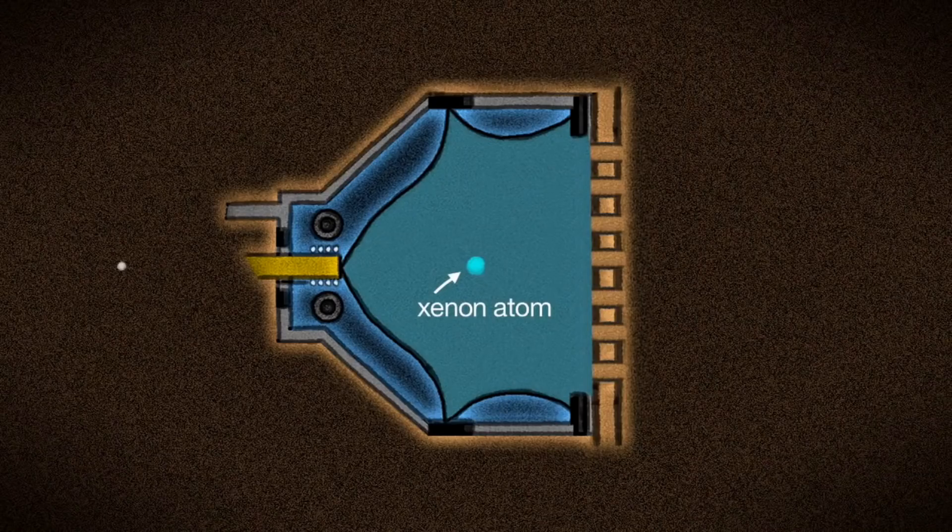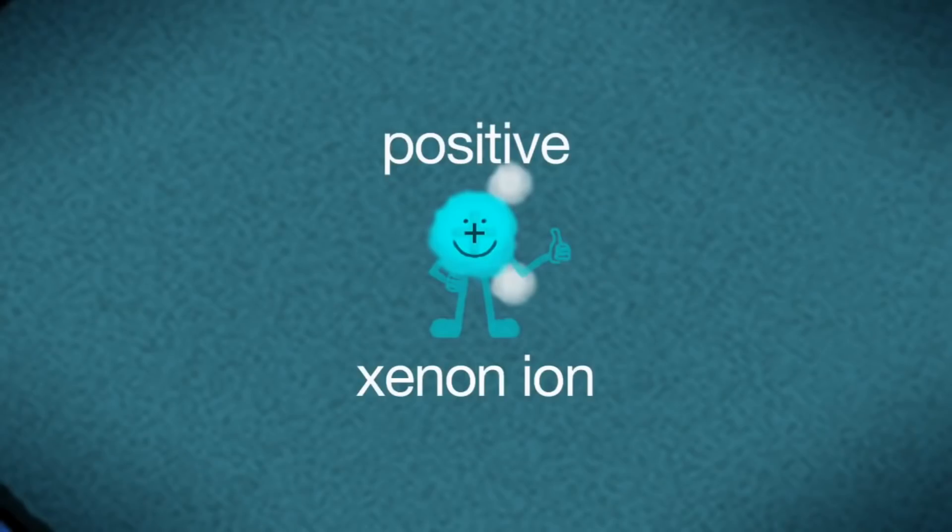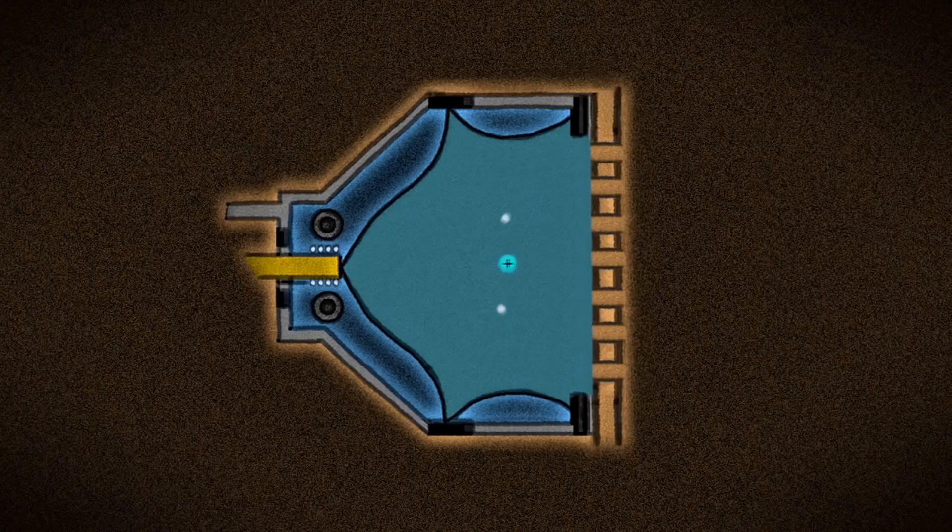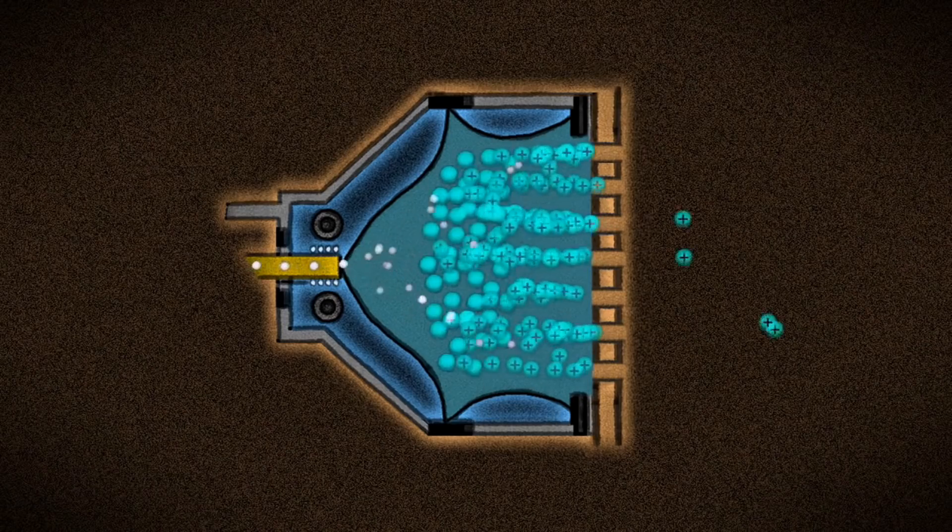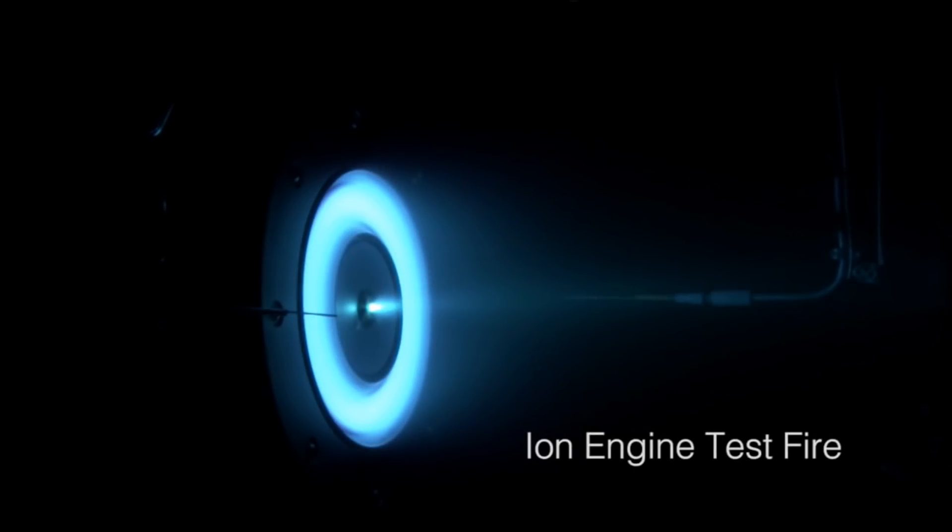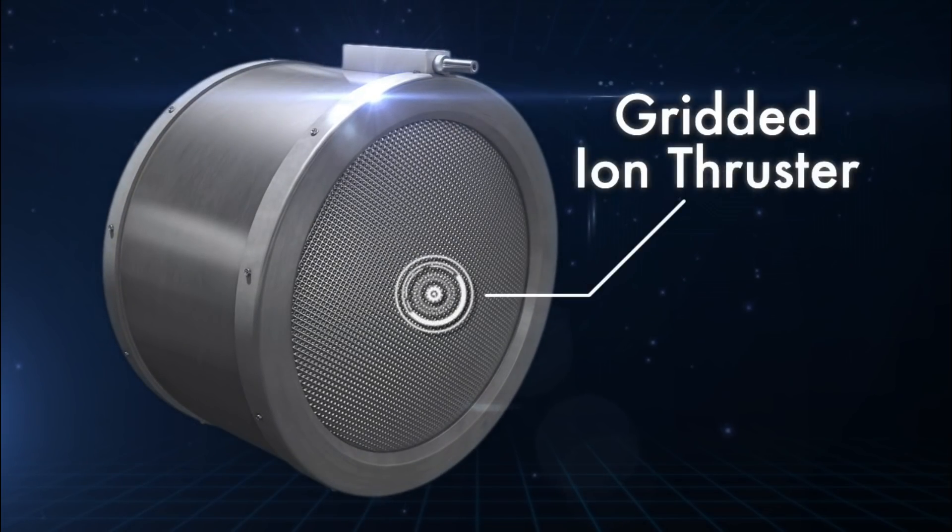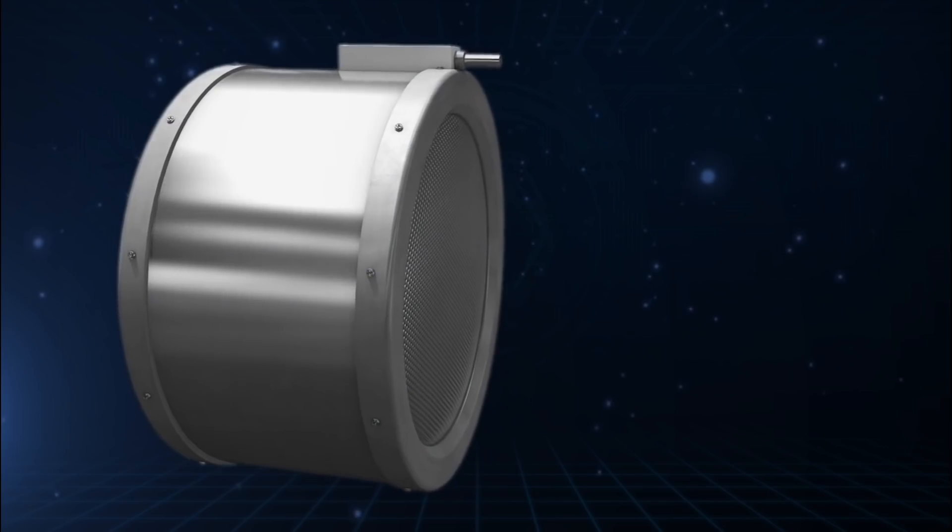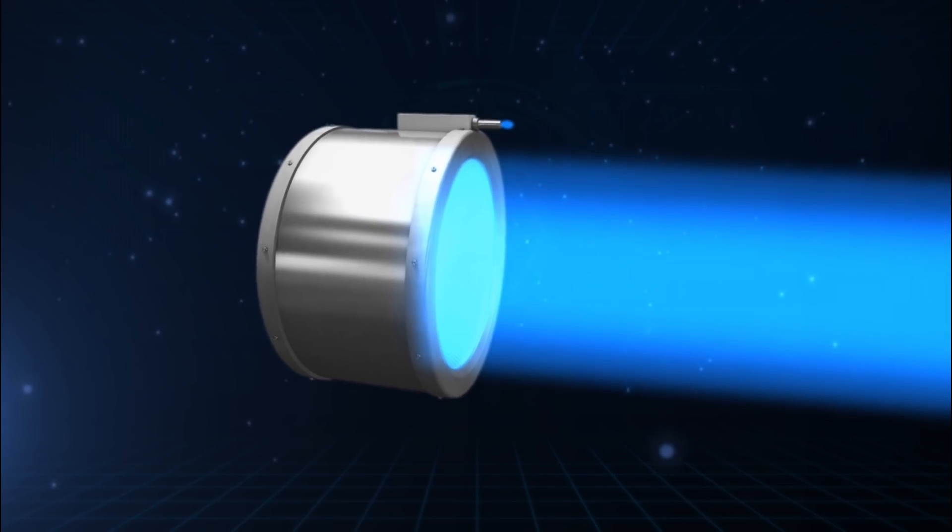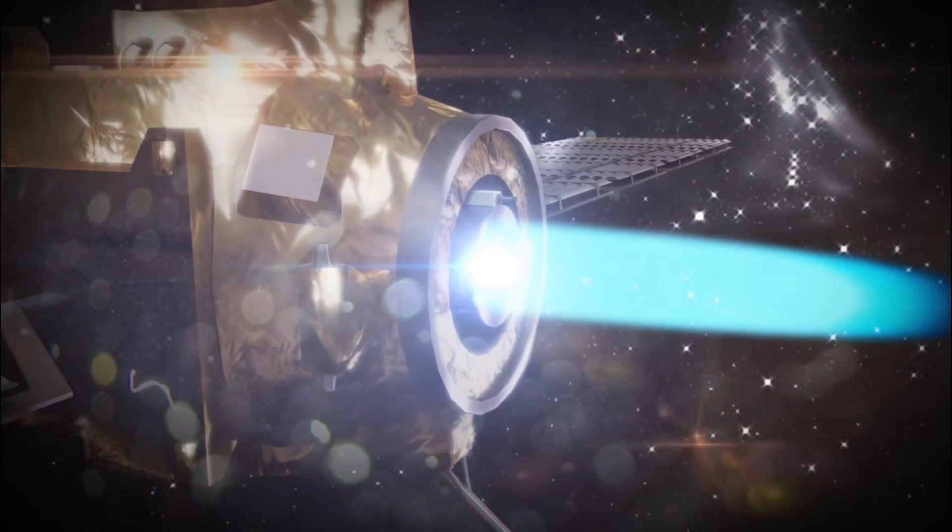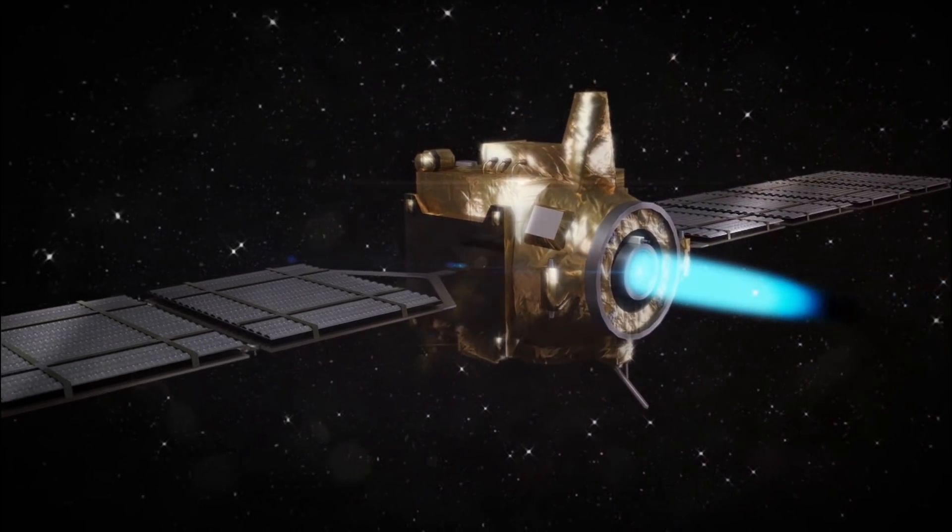Ionized means that an atom or molecule acquires a negative or positive charge by gaining or losing electrons to form ions. So, the ion thruster shoots electrons into the xenon gas creating ions. These positively charged ions are then accelerated through grids with thousands of precisely aligned holes at speeds up to 90,000 miles per hour. The exiting ions is called an ion beam and produces thrust which pushes the spacecraft towards the opposite direction.